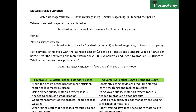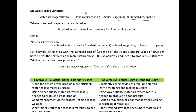In pure numerical terms, the material usage variance is calculated by taking the standard usage in Kg — whatever the raw material denomination is, be it kilograms, liters, meters, or whatever — minus the actual usage in Kg, multiplied by the standard cost per Kg. We're effectively taking a Kg amount in the brackets and multiplying it by a dollars-per-Kg amount outside the brackets to get the final variance in terms of dollars.